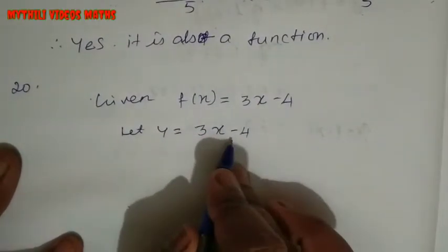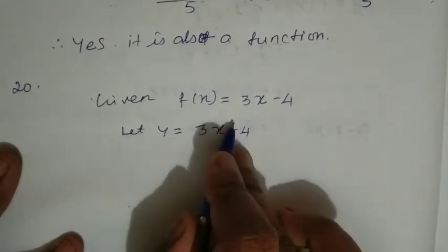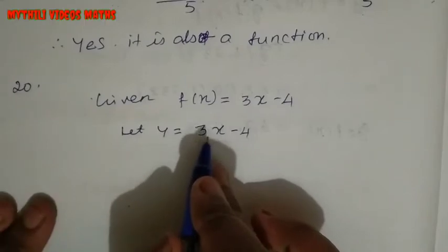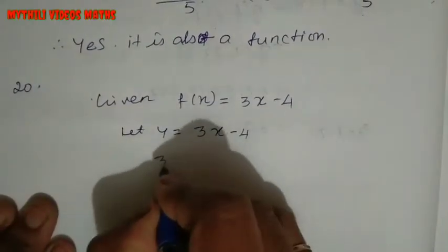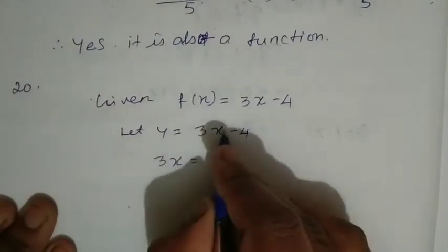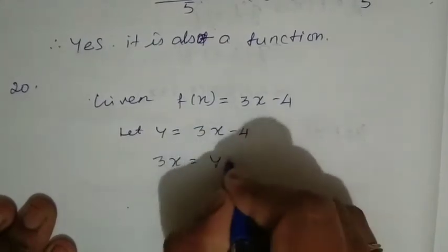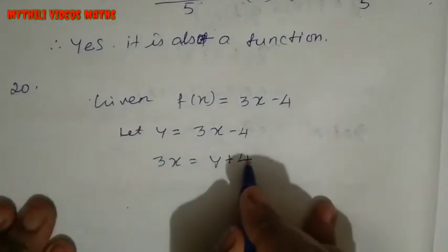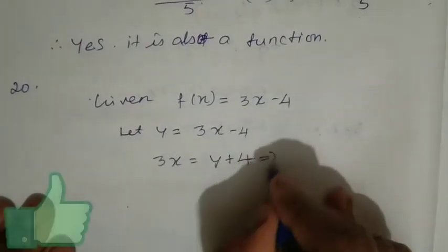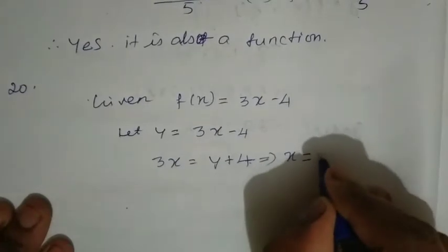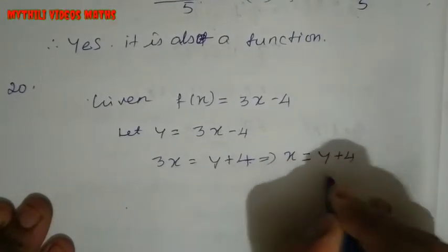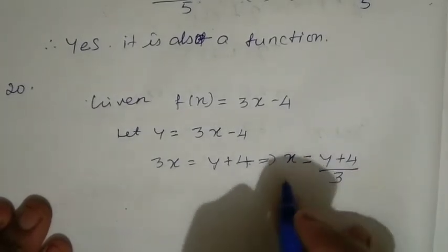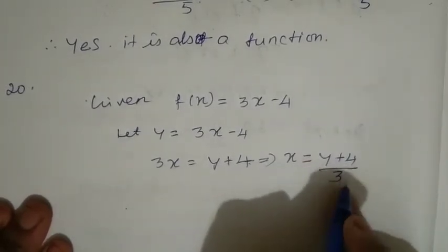So y = 3x - 4 is the function. In the function, we find the value of x in terms of y. So adding 4 to both sides: y + 4 = 3x. Therefore x = (y + 4) / 3.